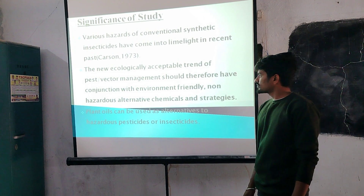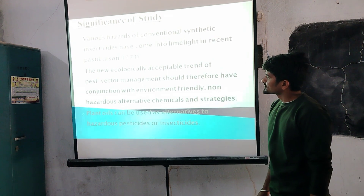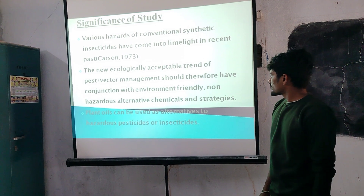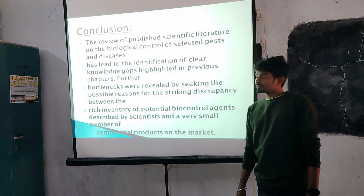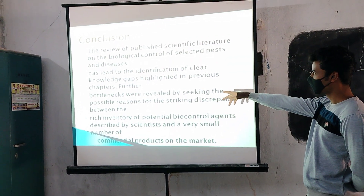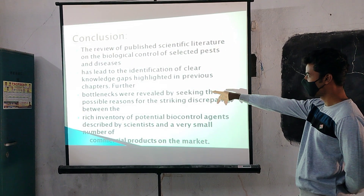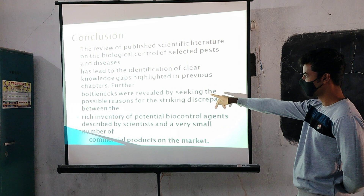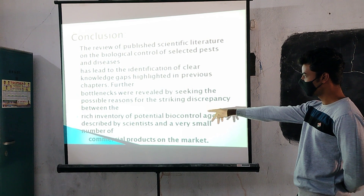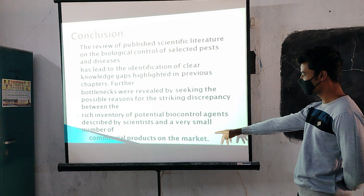The reason is that plant oils can be used as an alternative to hazardous pesticides or insecticides. Conclusion: the requirement to publish sensitive literature on the biological controls of selected pests and diseases has led to the identification of clear knowledge gaps highlighted in previous chapters. The bottlenecks were revealed by seeking possible results for the striking disparity between the rich inventory of potential biocontrol reserves and the existence of only a very small number of commercial products on the market.